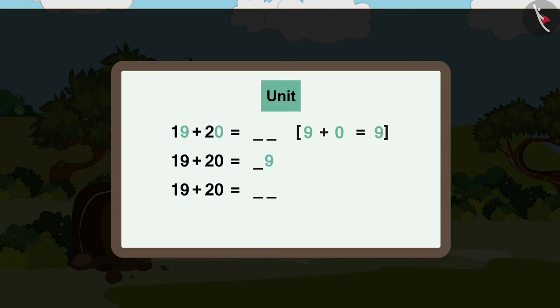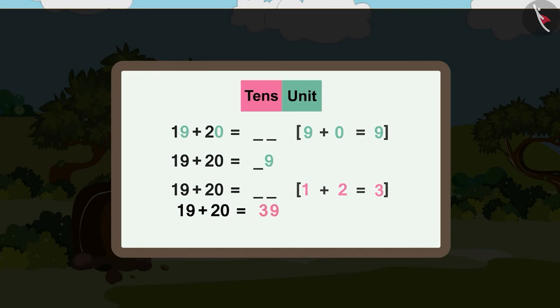Next we will add the numbers written in the tens section. 1 plus 2 is equals to 3. You need to buy 39 chocolates. This is why 19 plus 20 is equals to 39.